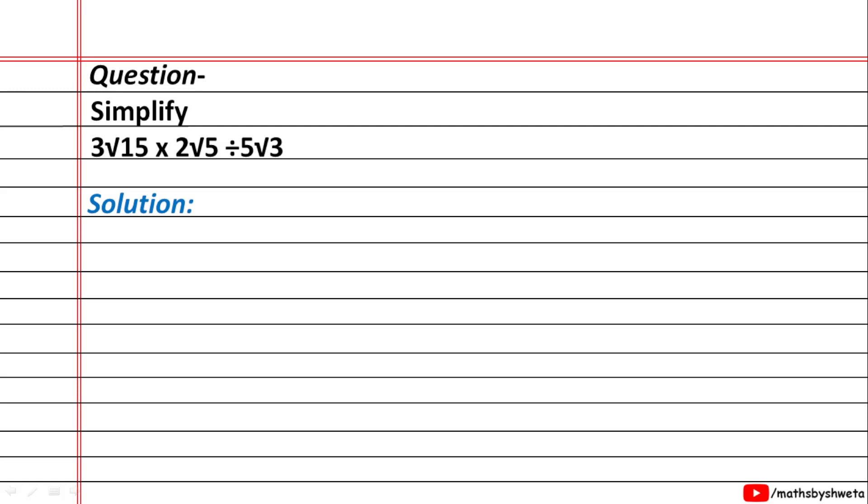Hello everyone, in today's class we have to simplify this problem. Our question is 3√15 multiply 2√5 divided by 5√3. In this question, we first apply BODMAS.